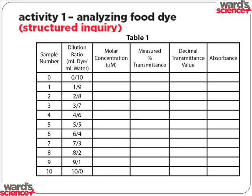Then we go into procedure one, which is the structured inquiry. It says students should obtain 60 milliliters of food dye blue number one, which is 6 micromolar in concentration — which we provide right in the box so you don't have to do any dilutions, saving time, energy, and money. They also need to make sure they have water present, as well as pipettes and a cuvette. One easy way to do the dilutions — we tell them to prepare a serial dilution — is with test tubes. I've labeled 10 test tubes 1 through 10, and did the dilution for each one, the first being 10 milliliters of water and number 10 being 10 milliliters of blue dye number one.